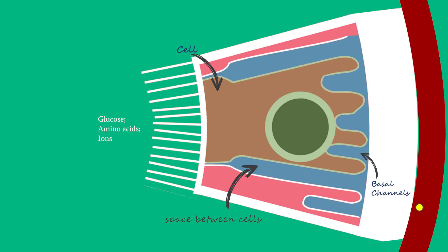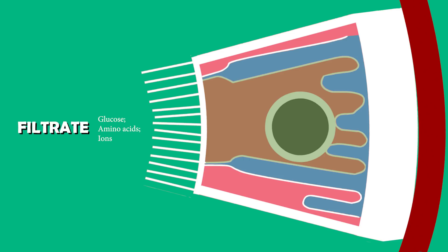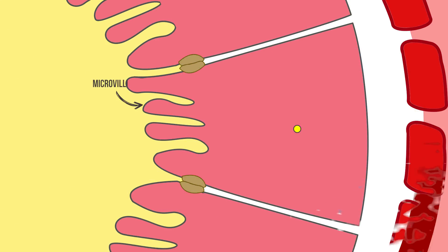The constant removal of these substances from the proximal convoluted tubule cells creates a diffusion gradient between the filtrate in the proximal tubule and the cells, down which further substances pass. Once inside the cells, they are actively transported into the spaces and channels, and the cycle continues.